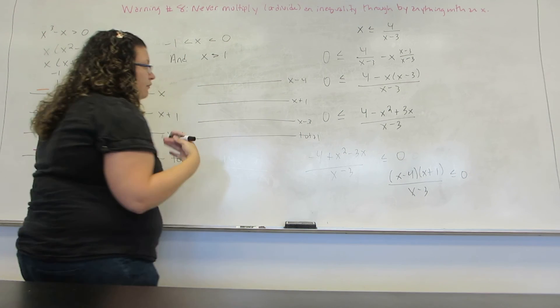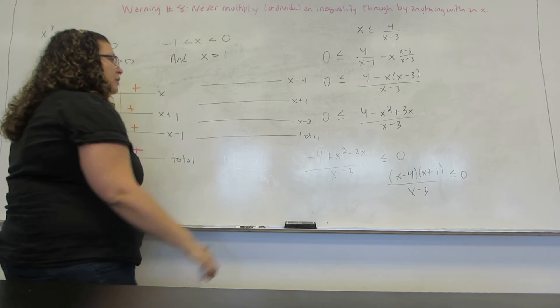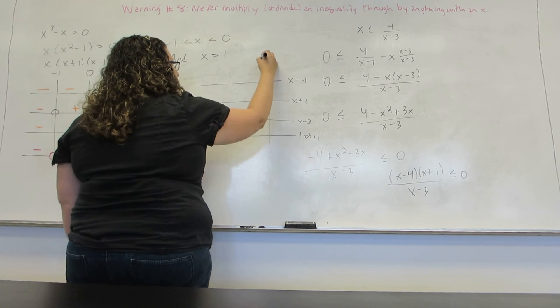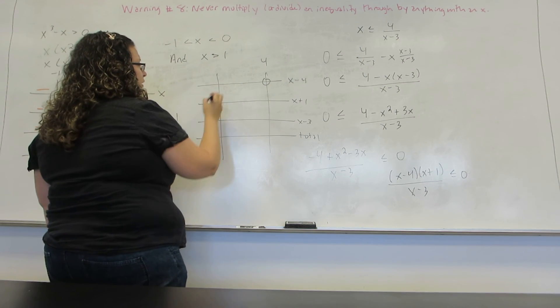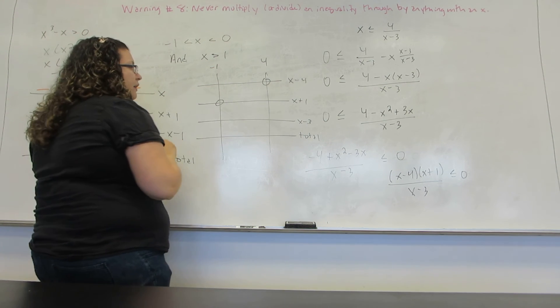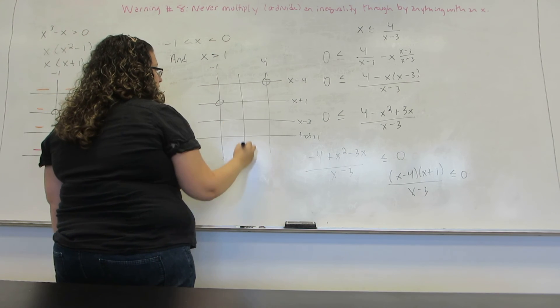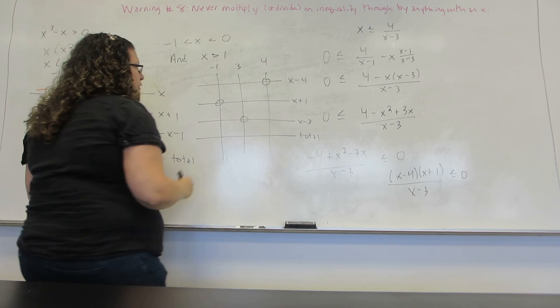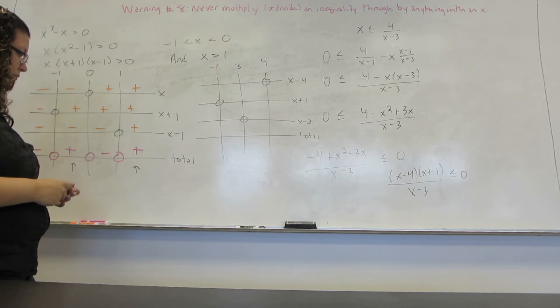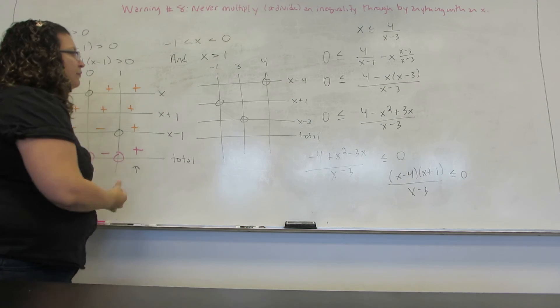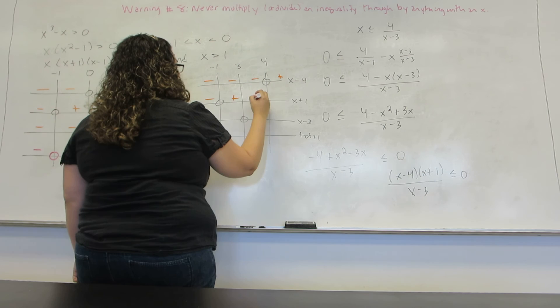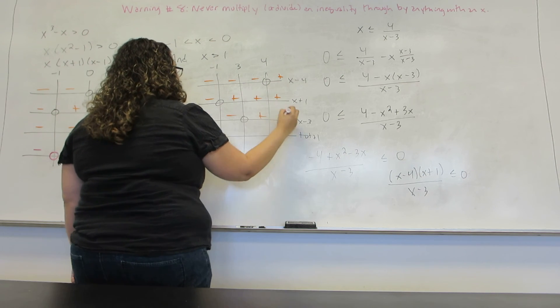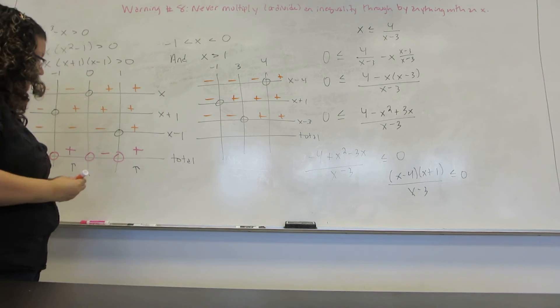I'm going to get a vertical line where every factor equals 0. So X minus 4 is 0 at 4. X plus 1 is 0 at negative 1. And X minus 3 is 0 at 3. Taking note to put them in the correct numerical order. Then everything is negative to the left and positive to the right of their individual zeros.